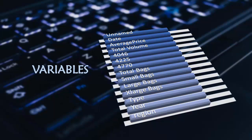And the variables are unnamed, date, average price, total volume 4046, 4225, 4770 and these are the various sizes of the avocado, total bags, small bags, large bags, x large bags, type that is whether the avocado is conventional or organic, the year and region.